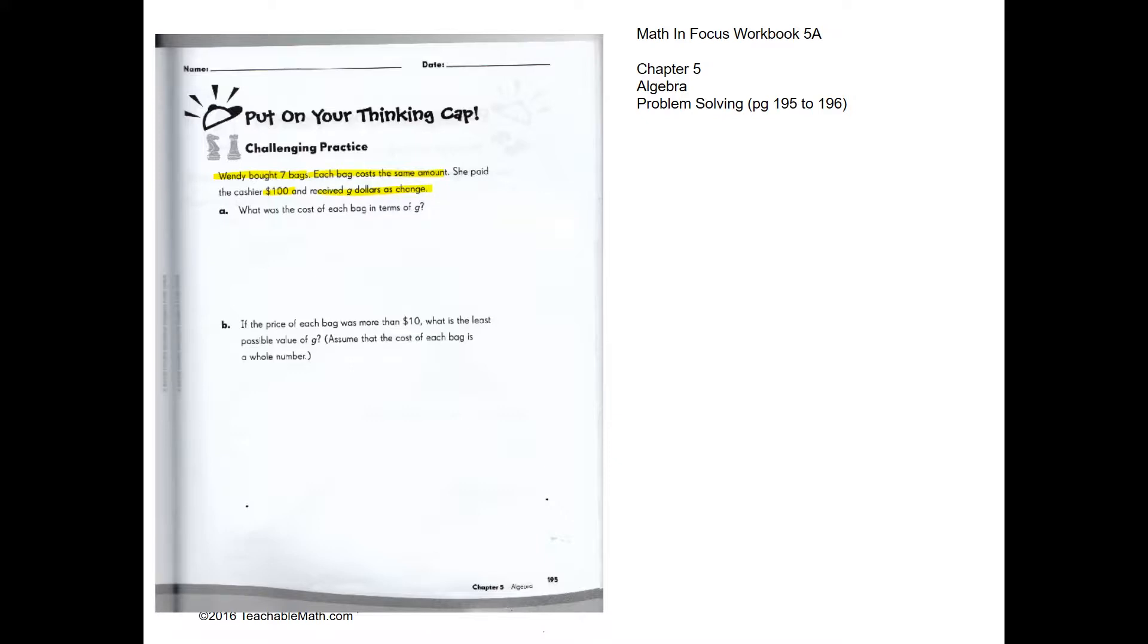So first let's figure out the amount that she paid. So that's the change. So the amount she paid will be 100 minus G. That's the amount she paid. So amount for each bag would be 100 minus G divided by 7. So that's the amount for each bag.